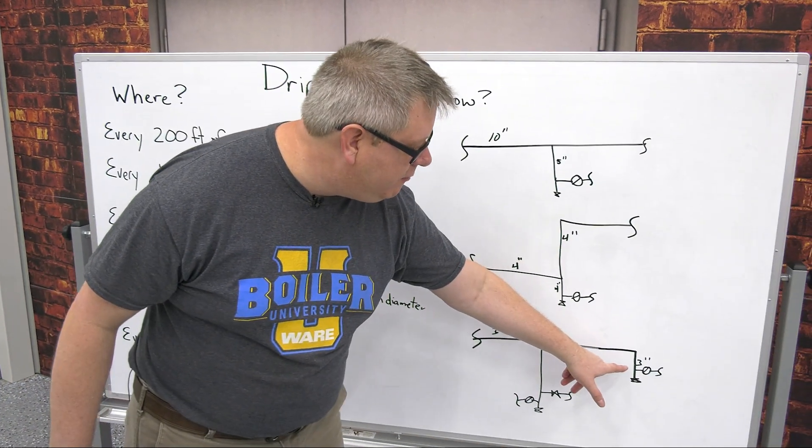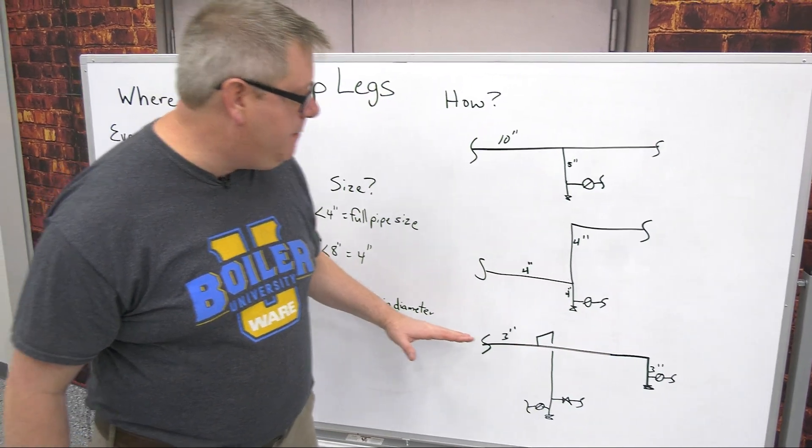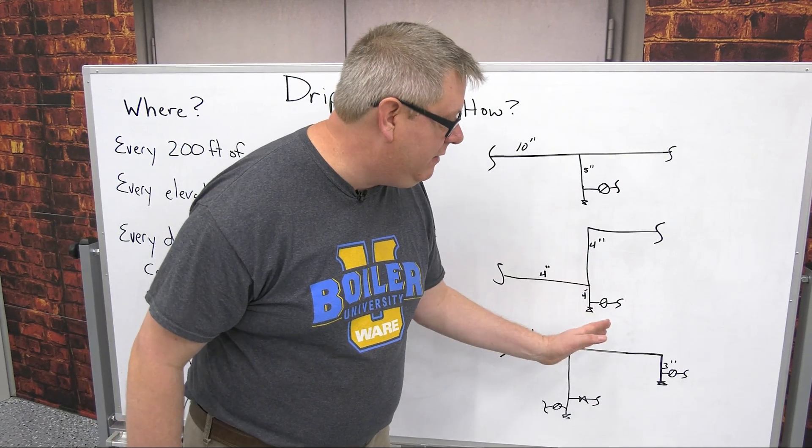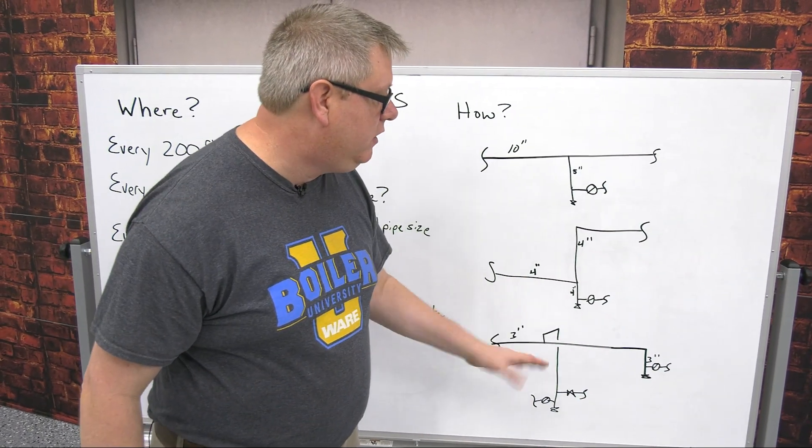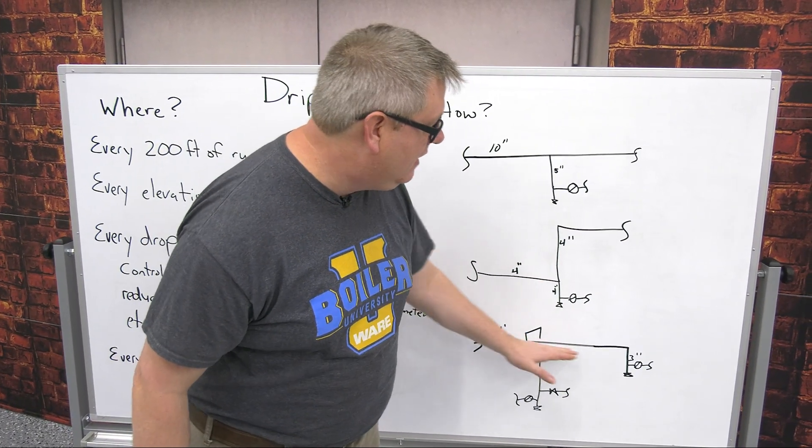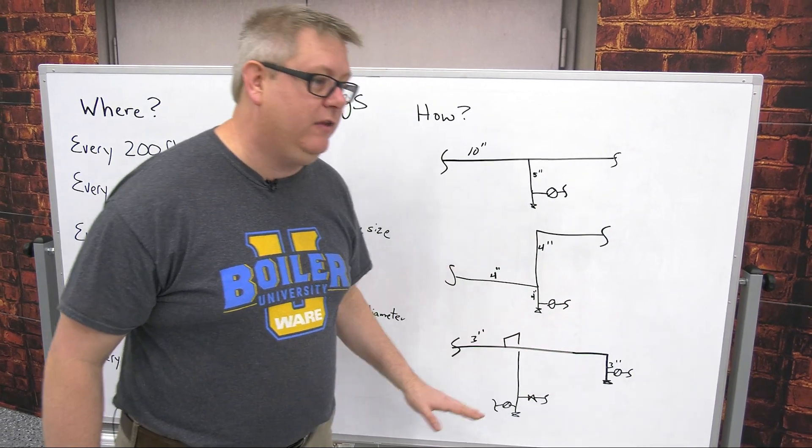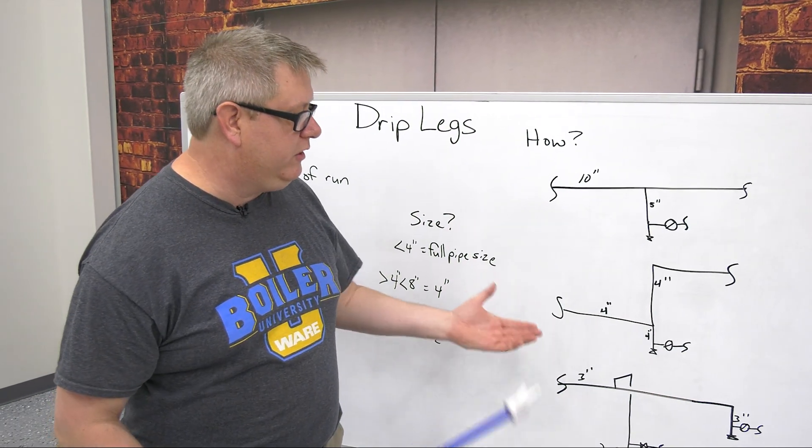And here we also show our end of main drip leg. So that main running down to the end of the plant, maybe we're going to add something down there later. It doesn't matter. We can't allow condensate to accumulate in there. It's going to cause problems and corrosion.